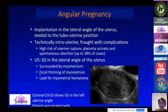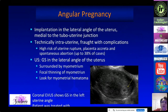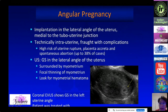Angular pregnancy is uncommon — it is implantation into the lateral angle of the uterus, medial to the tubo-uterine junction. It is technically intrauterine but fraught with complications including high risk of uterine rupture, placenta accreta, and spontaneous abortion. You will see a gestational sac that is too lateral but still surrounded by myometrium. This patient was treated with methotrexate for a suspected angular pregnancy.